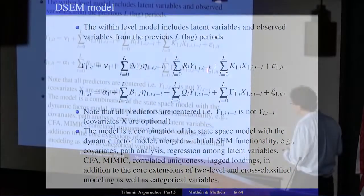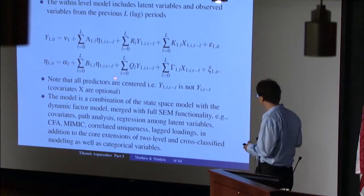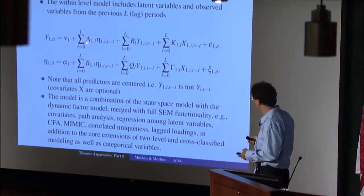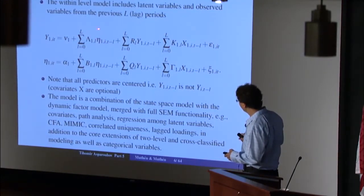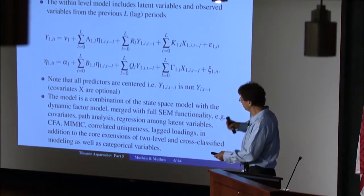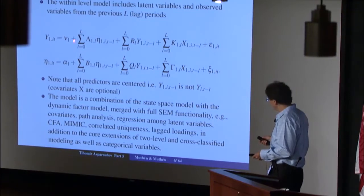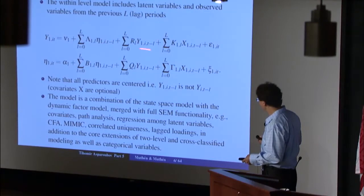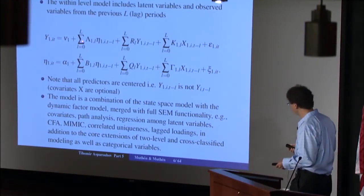The structural equation allows you to regress latent variables on other latent variables and covariates. The main difference from a standard structural equation model is that on the right-hand side, we allow latent variables not only from the current period but also from the previous L periods, where L is the lag of the model. So any latent variable at index T minus L can participate as a predictor for the dependent variable at the current time point.